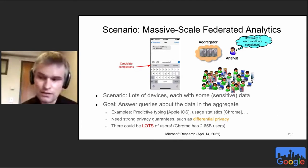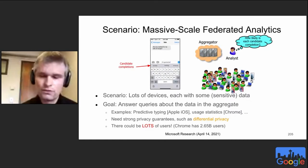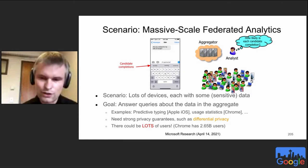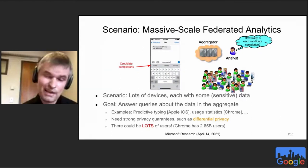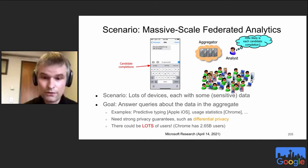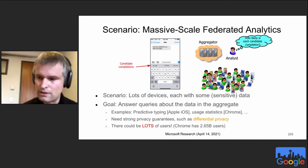An example would be predictive typing: if you wanted to train a predictor based on some prefix the user has typed to suggest words they might be trying to type. This is obviously very sensitive, so we want to give very strong privacy guarantees — particularly differential privacy.